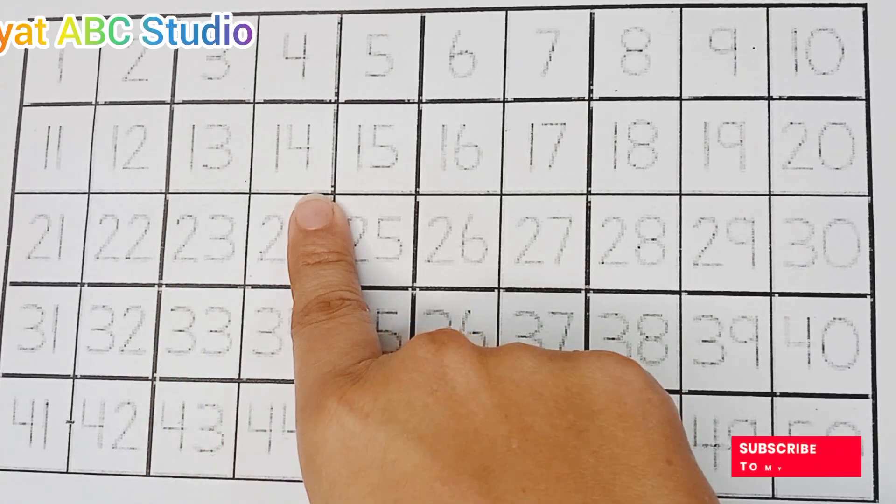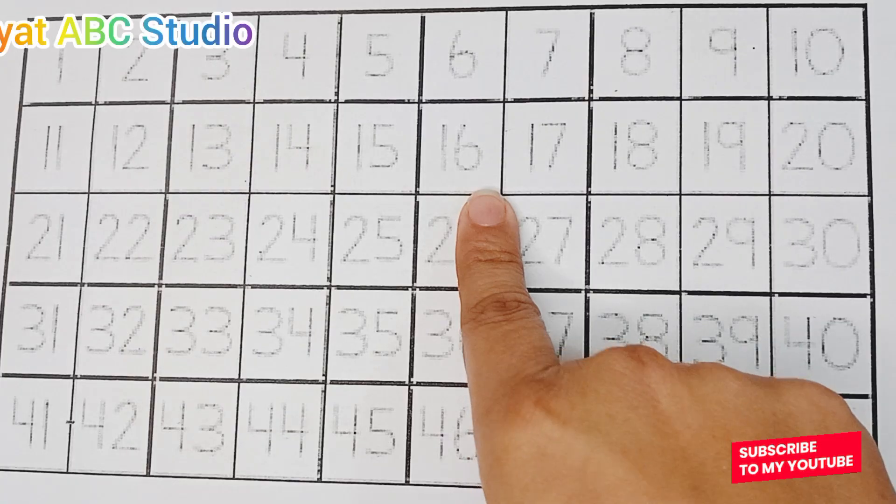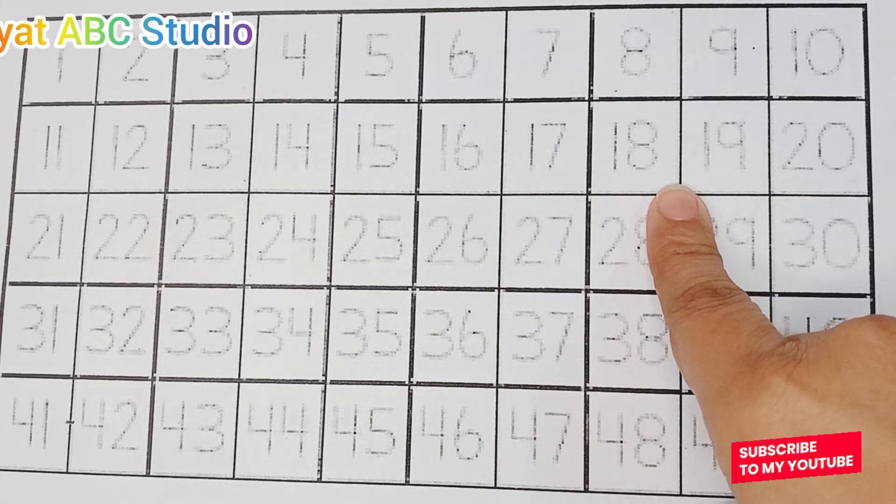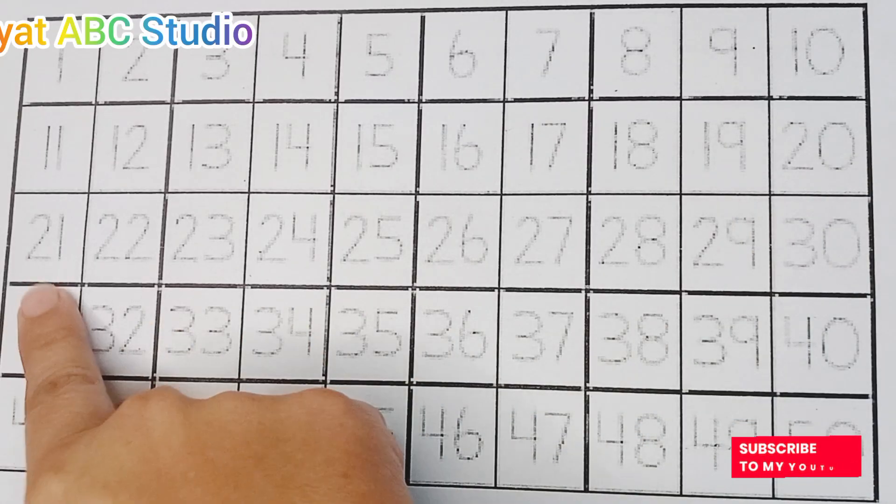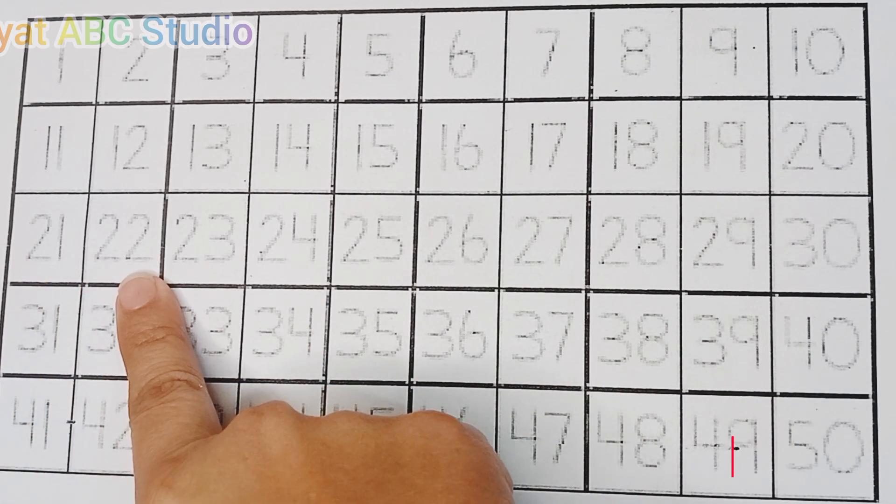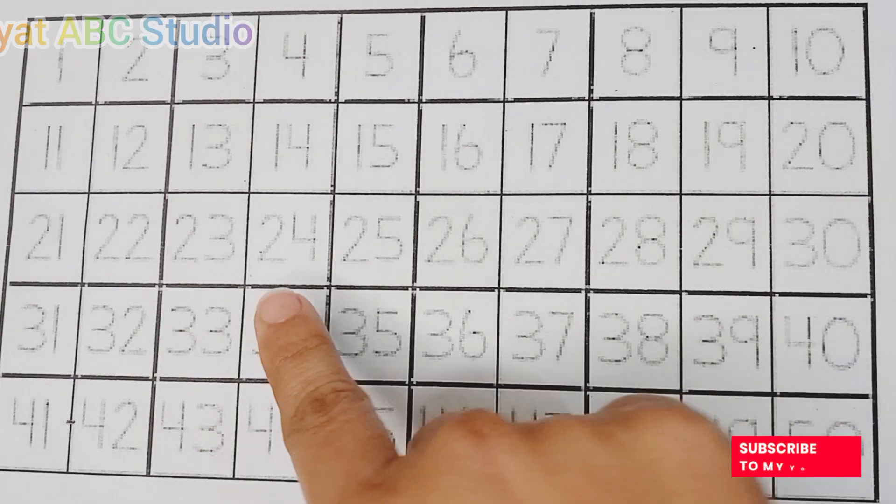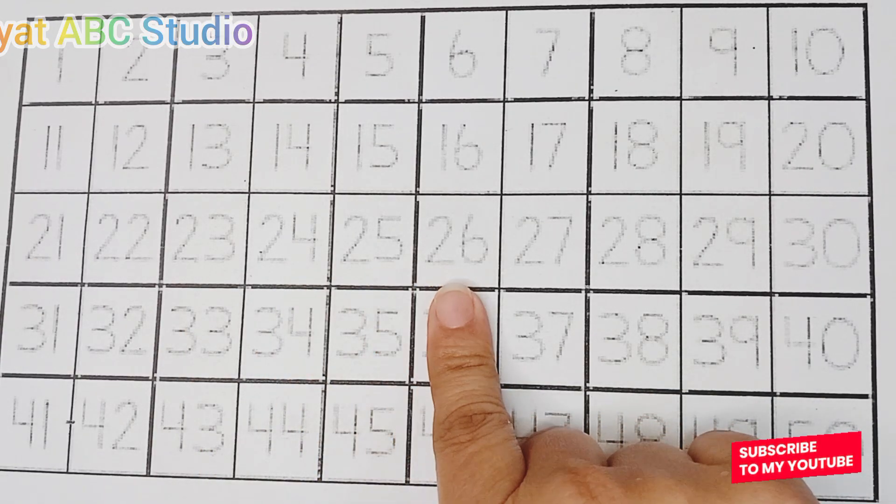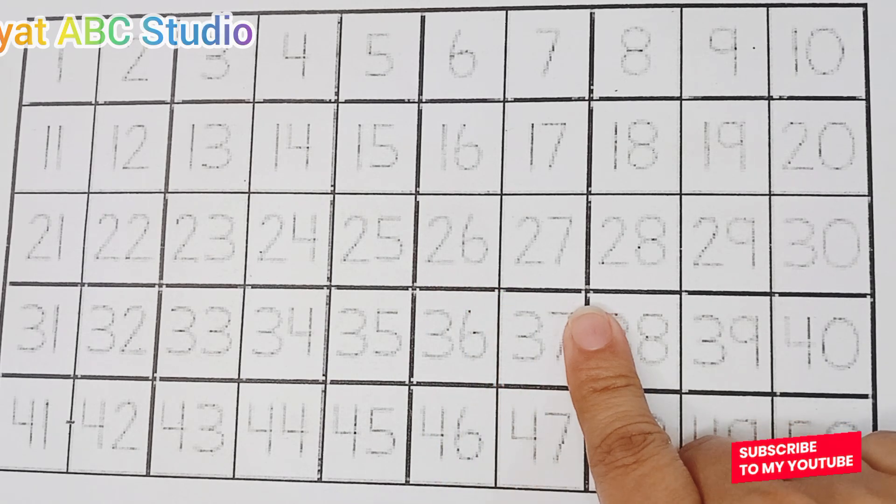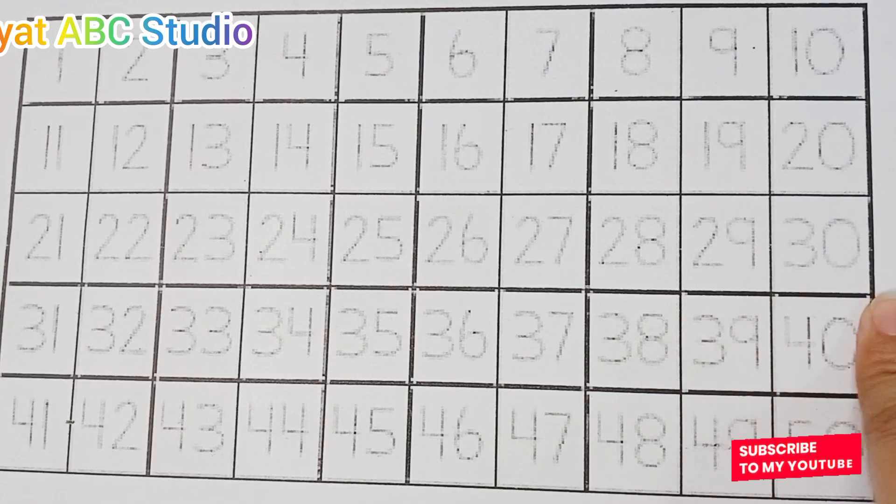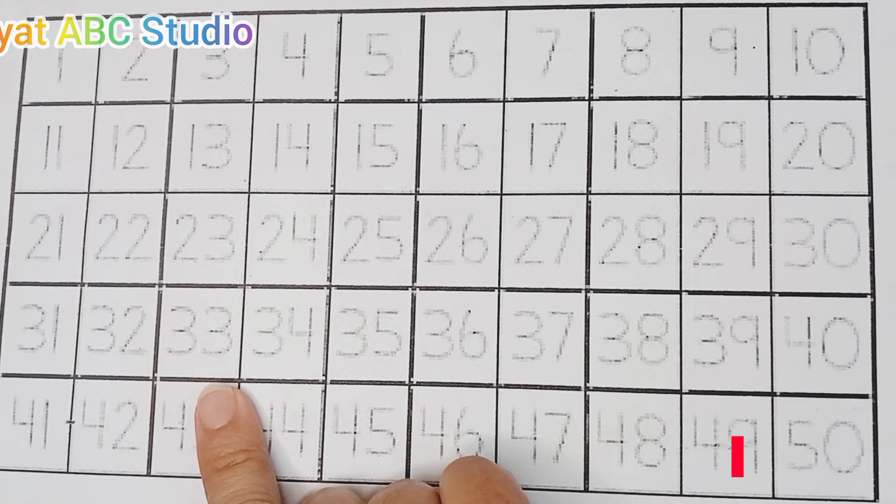13, 14, 15, 16, 17, 18, 19, 20, 21, 22, 23, 24, 25, 26, 27, 28, 29, 30, 31, 32, 33.